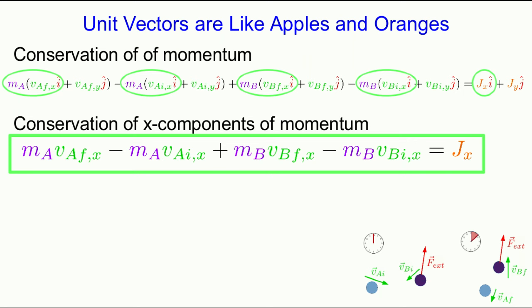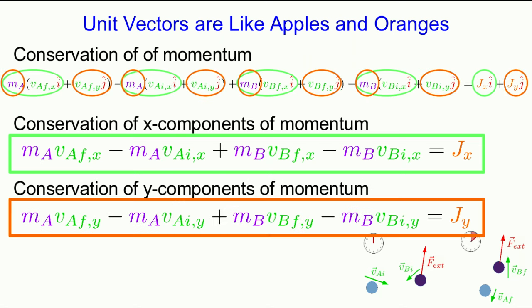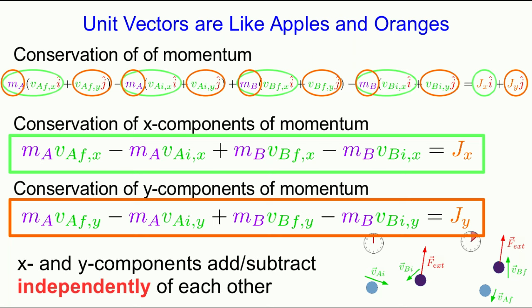And so we can say that this equation is the x component of our conservation of momentum equation. And similarly, I can now take out all the y components and write them as another equation. And so now instead of one very large, very cumbersome equation, I have two somewhat smaller, less cumbersome equations. And the point here is that our x and y components of all our vectors add and subtract independently of each other. And so we should treat them independently. We might as well pull them out into separate equations.